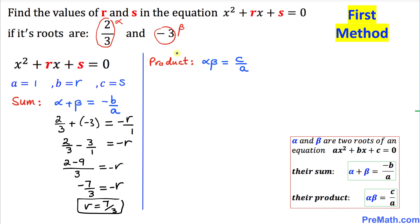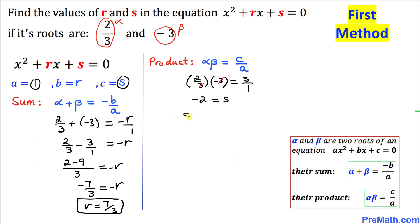In this next step we are going to find the product of these two roots: alpha times beta equals c over a. In our case alpha is 2/3, beta is negative 3, equals s divided by 1. The 3s cancel, so we get negative 2 on the left hand side equal to s over 1, which is the same as s. So s is simply negative 2.